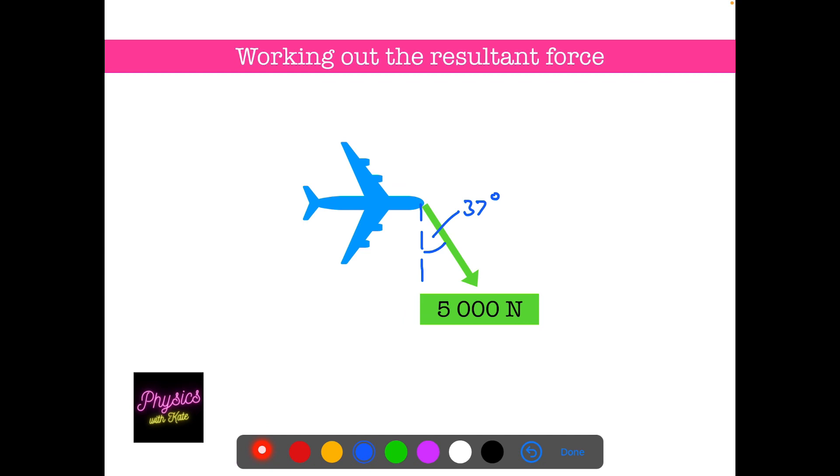If you wanted the other angle, then you'd inverse tan, but you'd put the forces the other way up because the opposite and adjacent would switch around.